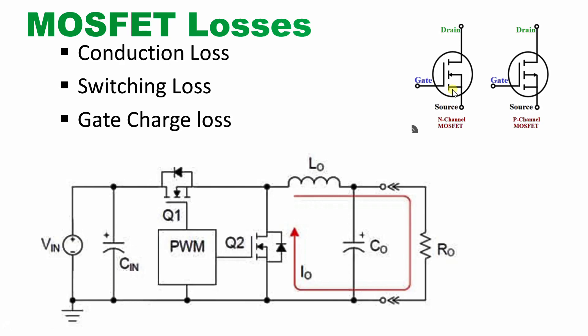The third is the gate charge loss. We have to apply a gate-to-source voltage — it is a voltage-controlled device, whereas a BJT is a current-controlled device requiring base current. The loss happening during that phase is called the gate charge loss.